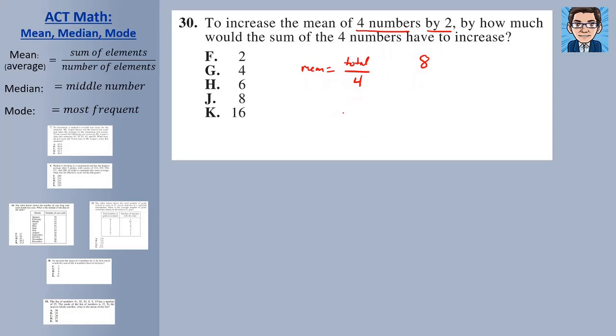So 100, if we had 100 as a total, the mean would be 25. So for that mean to go up by two or 27, the total would have to go up to 108. 27 times four is 108. So that's just another way to look at it is to pick numbers for unknowns and to approach it that way. So we'd have to go from 100 to 108. Again, an increase of eight, which is J as our answer.